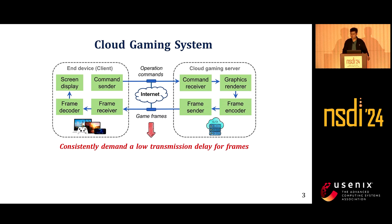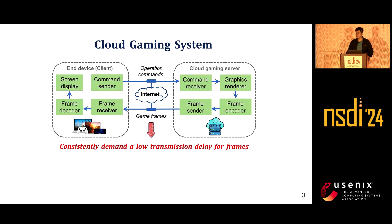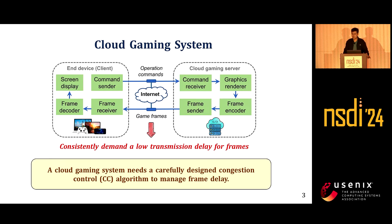While this is a promising paradigm for gaming, a key premise is that the game frames rendered on the cloud must be transmitted to the end device at a constantly ultra-low delay, typically within 50 milliseconds. High frame delay would severely undermine gaming interactivity. So a cloud gaming system must be equipped with a carefully designed congestion control — CC for short — algorithm to manage frame delay.